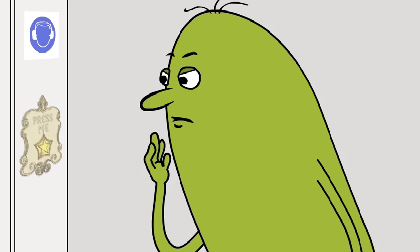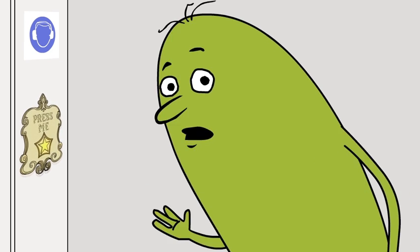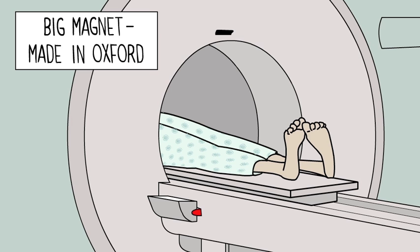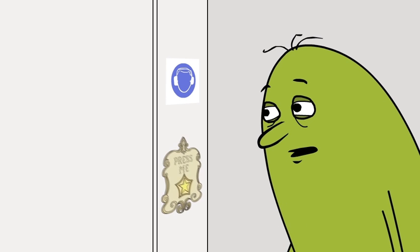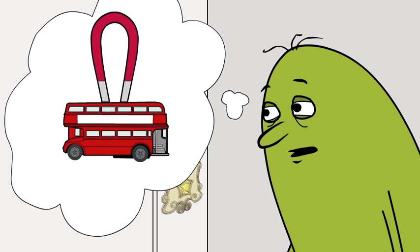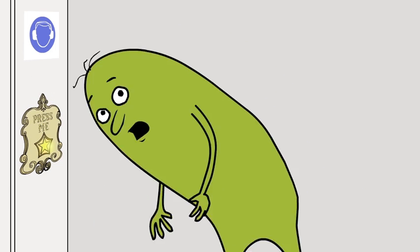The clarity of the images we are seeing is down to us using one of the strongest MRI machines in the world. It has a seven Tesla magnet inside it. That is strong enough to pick up a double-decker bus. But we use it to find out how the brain works.